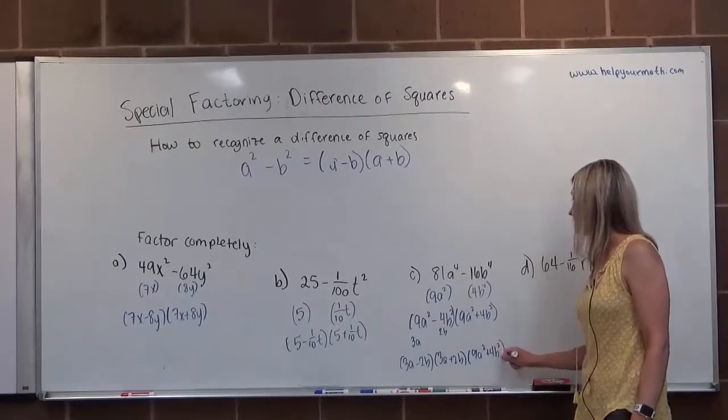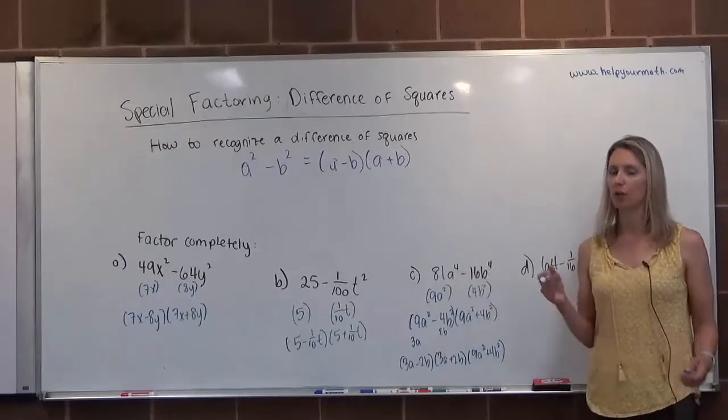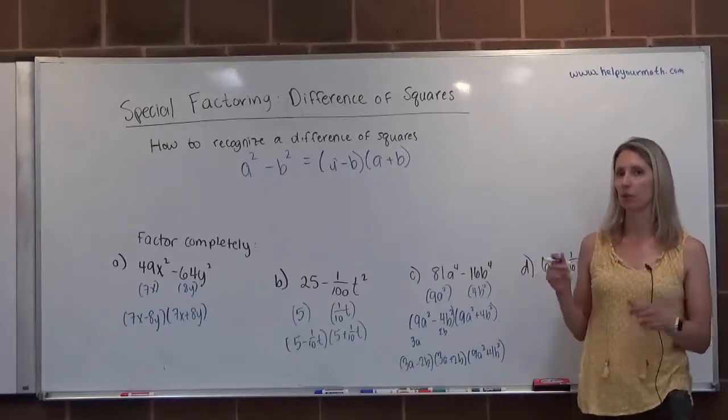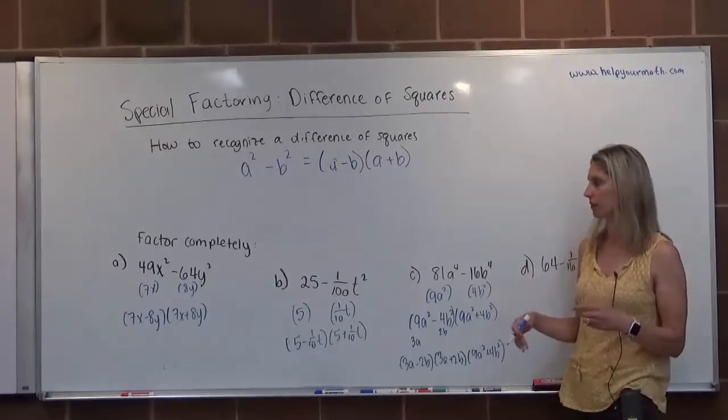So be careful. Anytime you see a degree higher than 2, be careful that there's not another difference of squares hiding inside the original difference of squares.